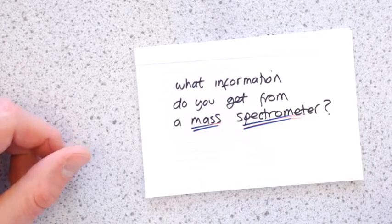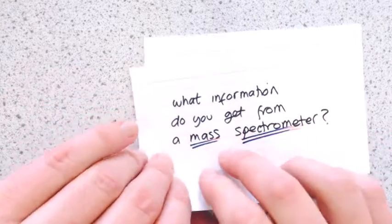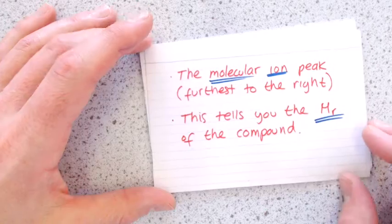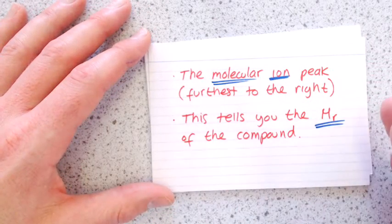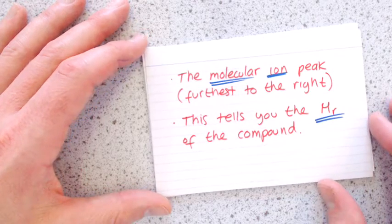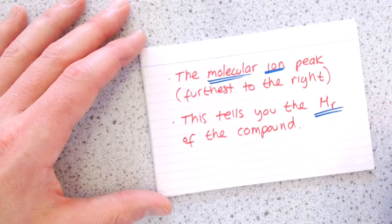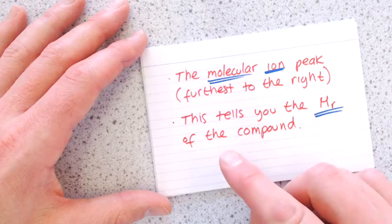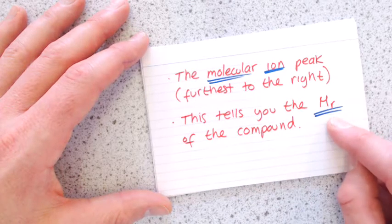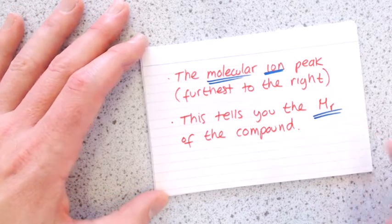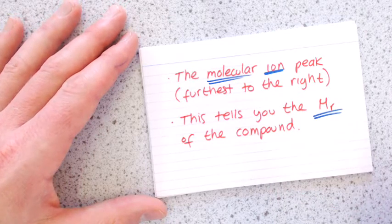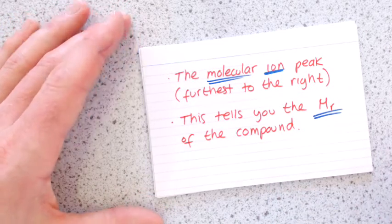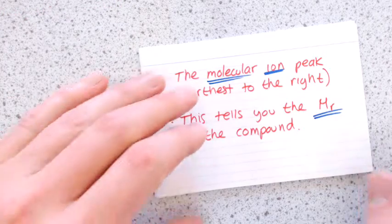Next one, what information do you get from mass spectrometry? So you get something called a molecular ion peak, and this will always be the peak that's the furthest to the right-hand side on a mass spectrum. And this tells you what the relative molecular mass is of your compound. So you can use gas chromatography and mass spectrometry together, and you can tell how many different compounds you've got, and a bit of information about them as well.